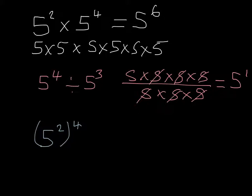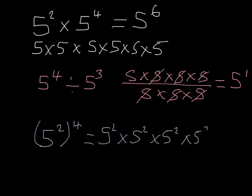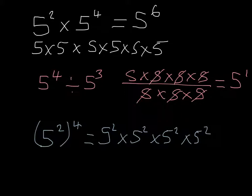Finally, the last one — I've got 5 squared to the power of 4. This means 5 squared times 5 squared times 5 squared times 5 squared. So we've got four 5 squareds multiplying together. Using the law from before, I can do 2 add 2 add 2 add 2, and that's going to give me 5 to the power of 8.